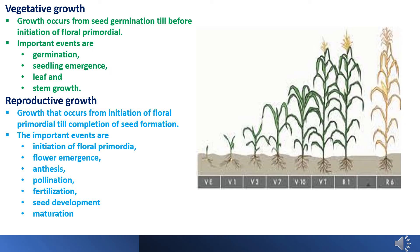There are various events taking place within reproductive growth cycles, like primordial initiation, flower emergence, anthesis, flowering, pollination, fertilization, seed development, and maturation. So this reproductive growth covers the grain yield part.